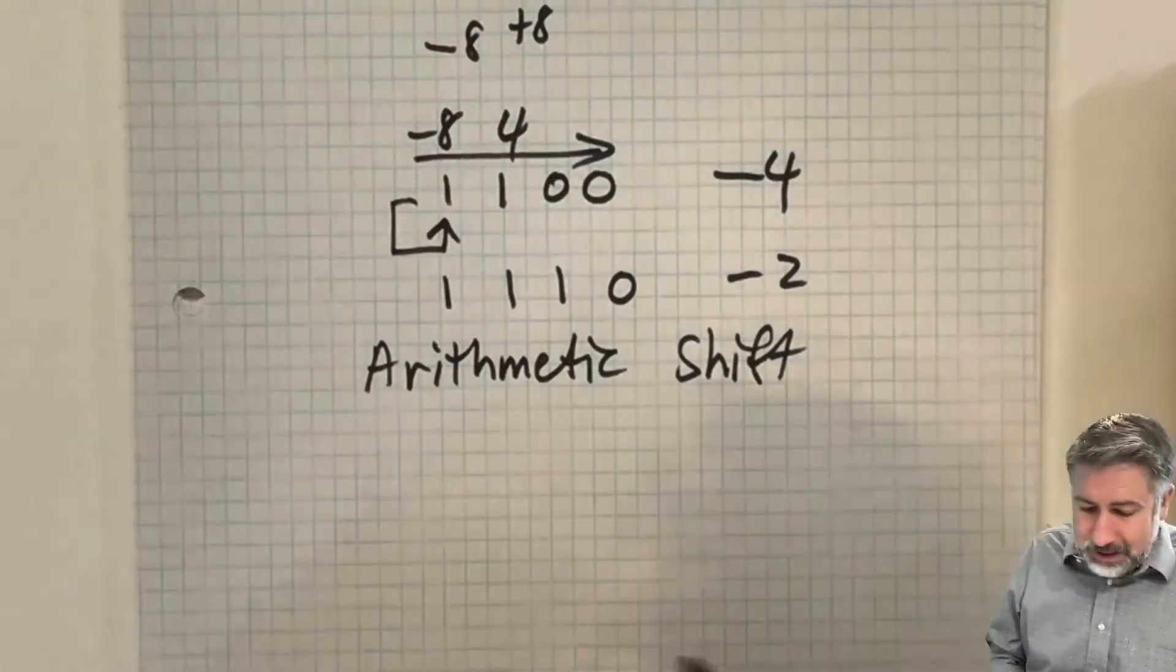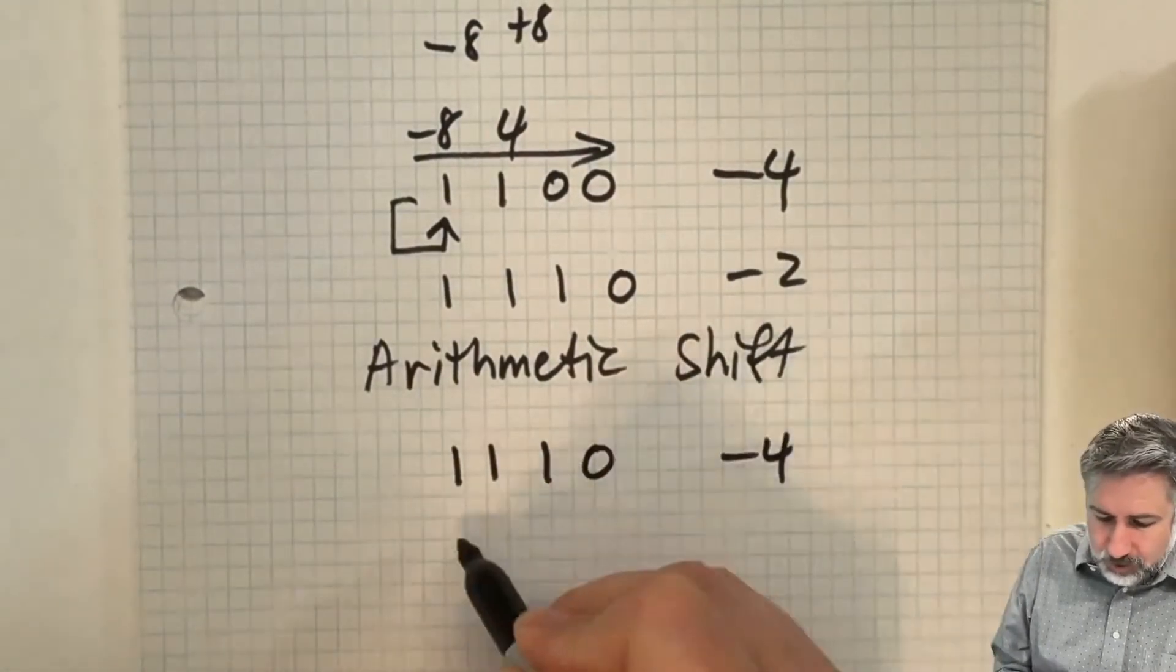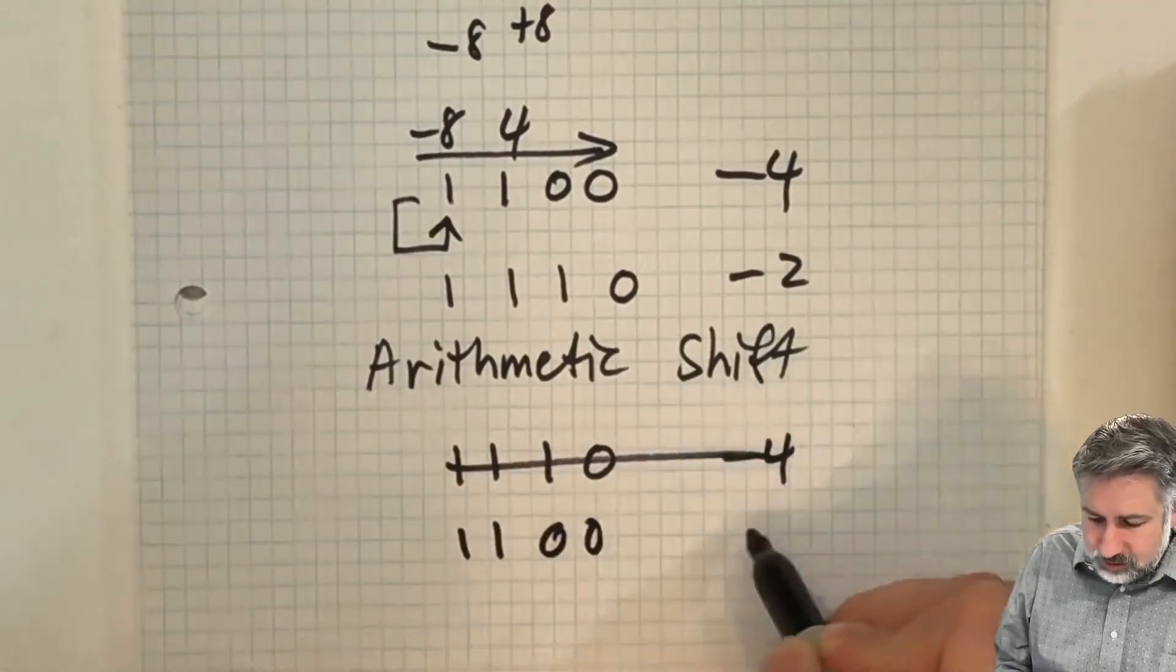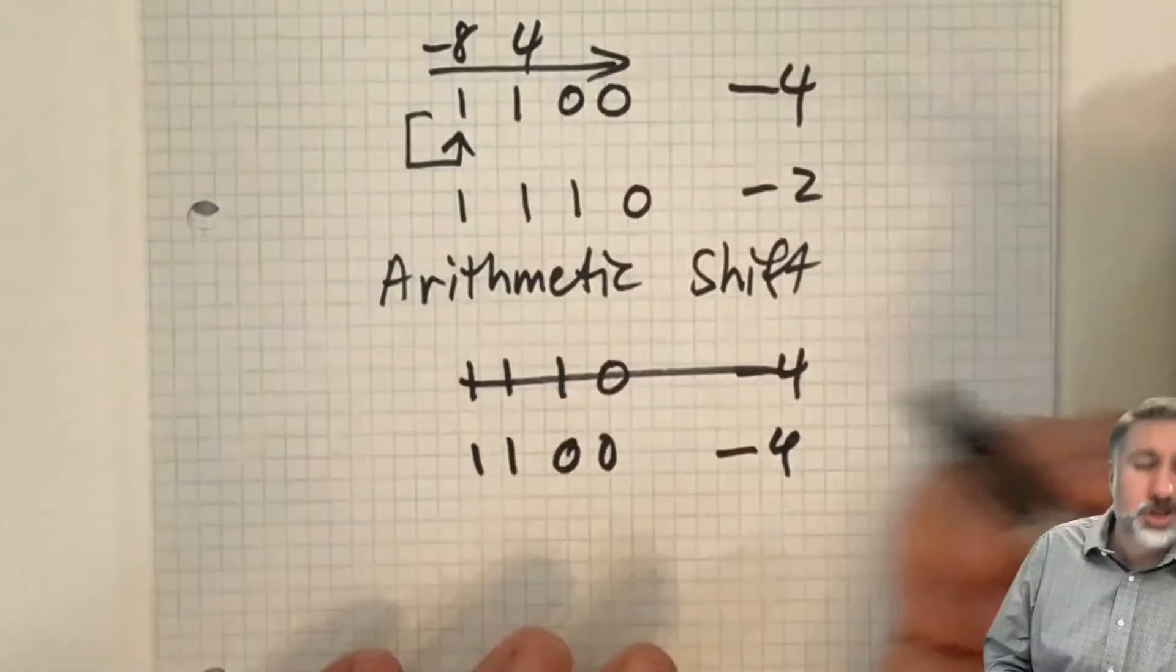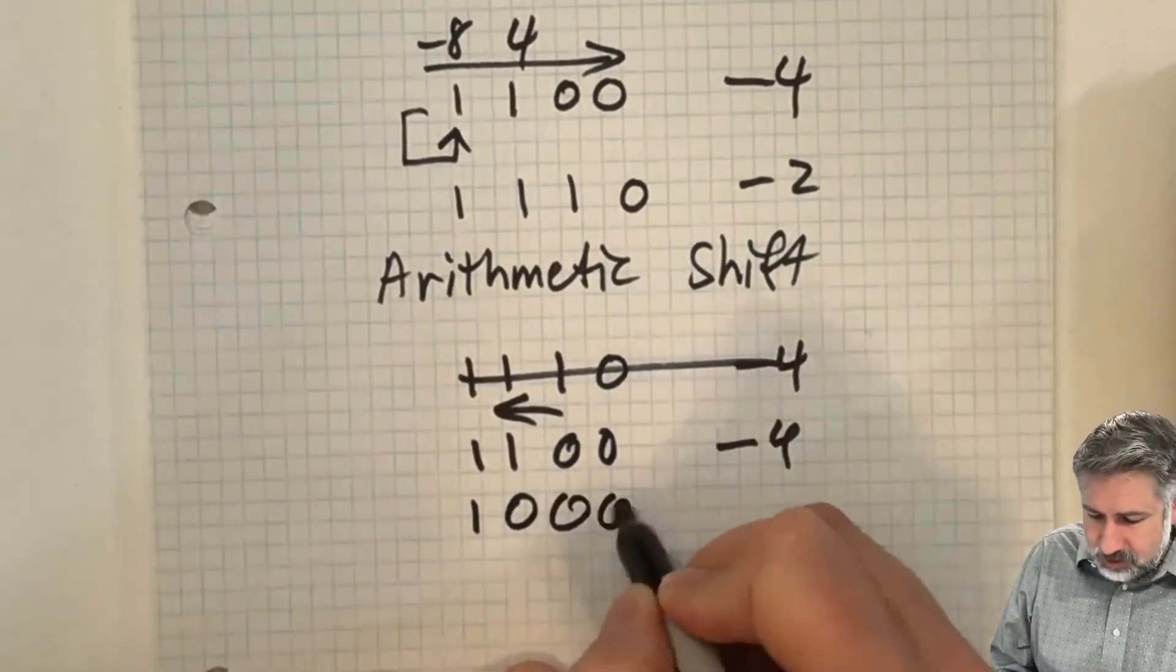When we shift to the right, the same thing is going to happen, right? If we have one, one, one, zero, this is negative four. One, one, zero, zero is negative four. We're going to shift to the right, to the left. And we're going to get one, zero, zero, zero, which is negative eight.